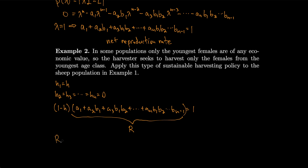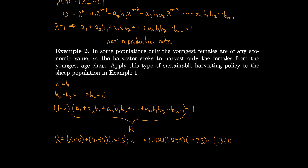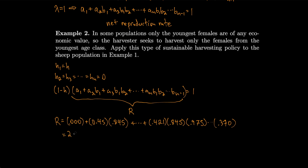For the sheep example, r equals 0.00 plus 0.45 times 0.845, and continuing through the terms ending with 0.421 times 0.845 times 0.975 and so on through 0.370, giving r equal to 2.514. Solving for h: h equals 1 minus 1 over r equals 1 minus 1 over 2.514, which gives h equals 0.602.